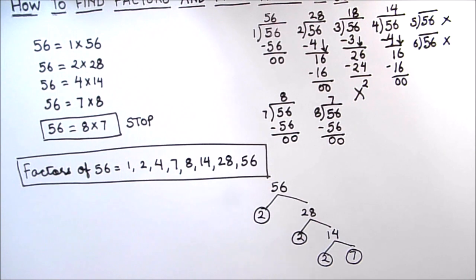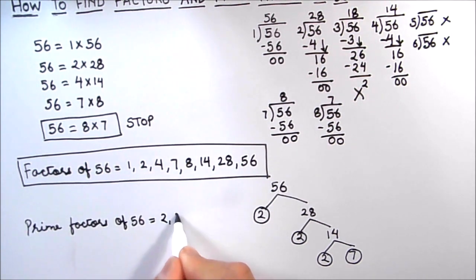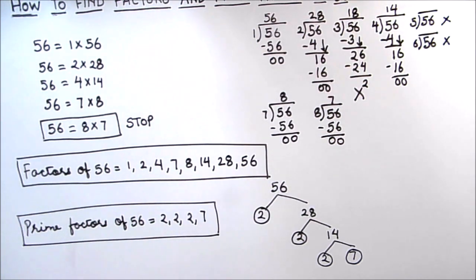So prime factors of 56 are 2, 2, 2, and 7. These are the prime factors of 56. By using these methods, you can find the factors and prime factors of any number. I hope this video is helpful to you. If you like the video, please hit the like button and subscribe to my channel for more math videos. Thanks for watching.